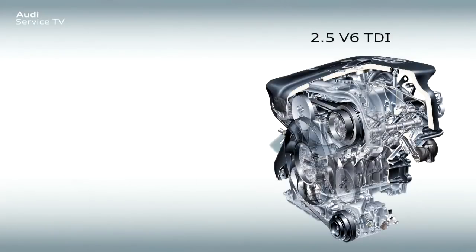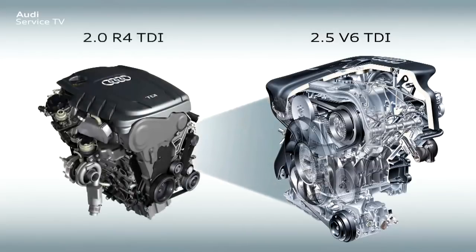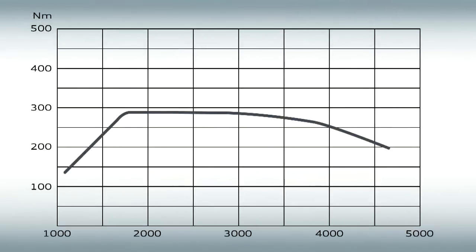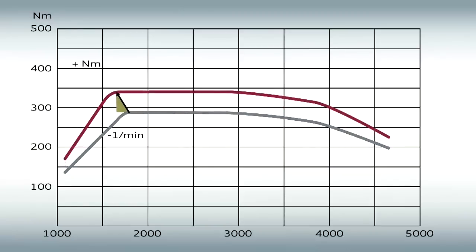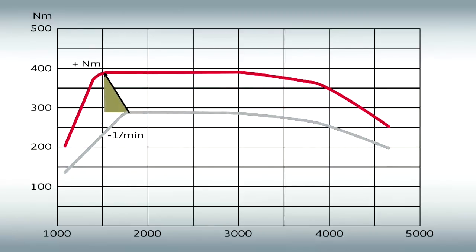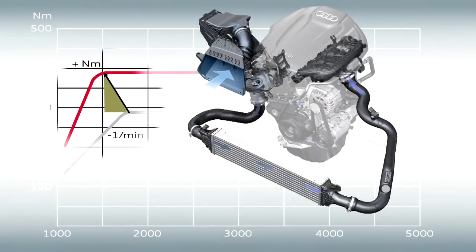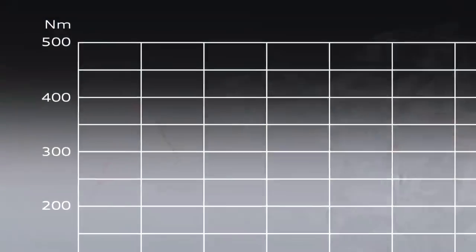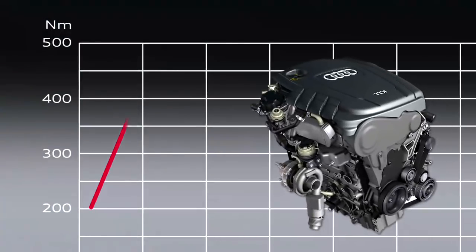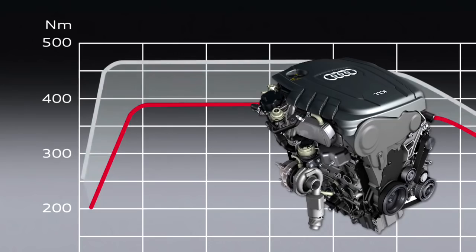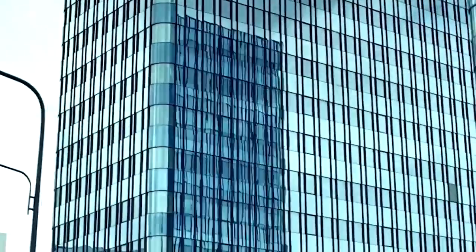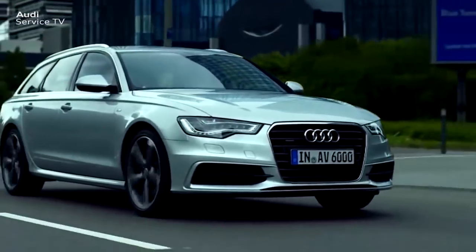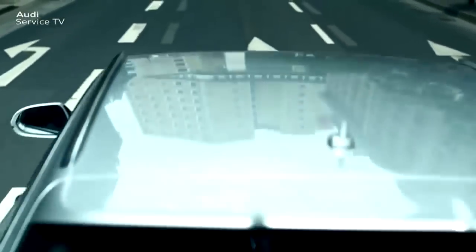Down-sizing is all about generating more torque from less capacity. Down-speeding means that as high a torque as possible is available at as low an engine speed as possible. These two development targets are mainly achieved by highly efficient forced induction and a reduction in the number of cylinders. Modern supercharged diesel and petrol engines already supply a very high torque at lower engine speeds, and the trend is towards even higher torque at even lower engine speeds. An engine characteristic like this enables low engine speed and therefore fuel-saving driving while maintaining good acceleration.